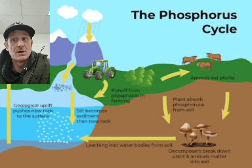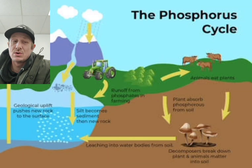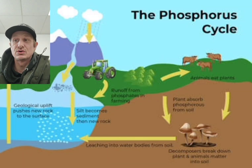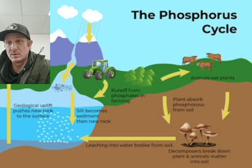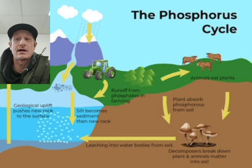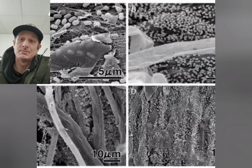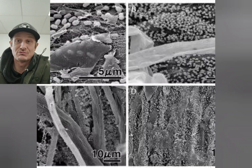There is a catch though. Most of the phosphorus in soil is bound in insoluble forms, making it unavailable to plants. And this is where different types of microbes come to the rescue.